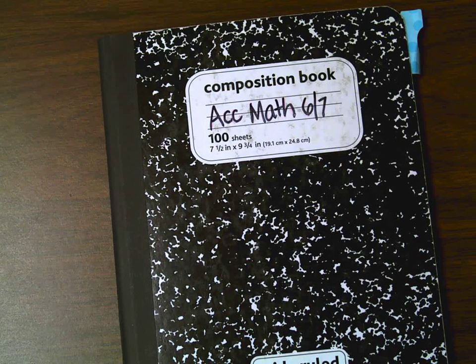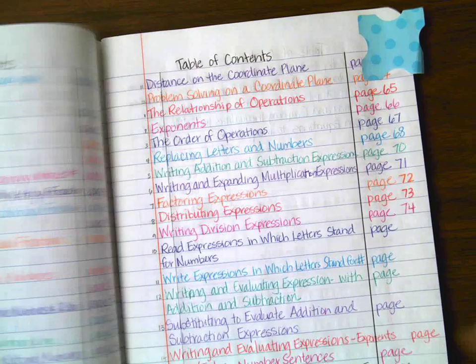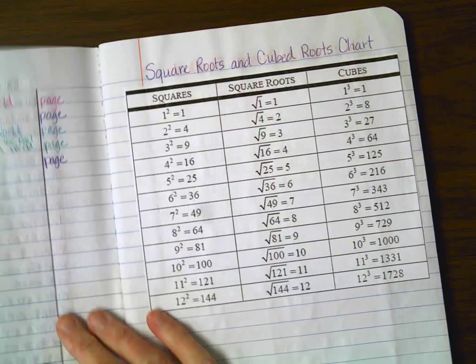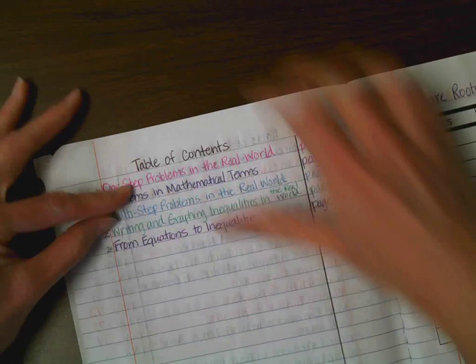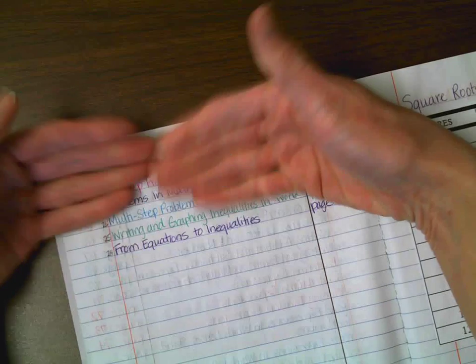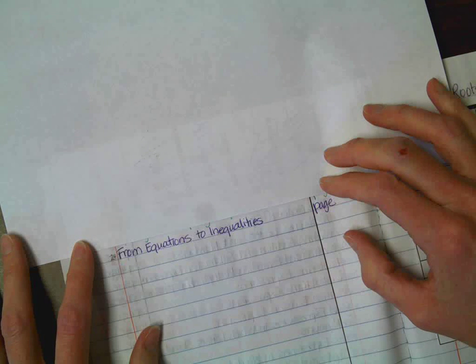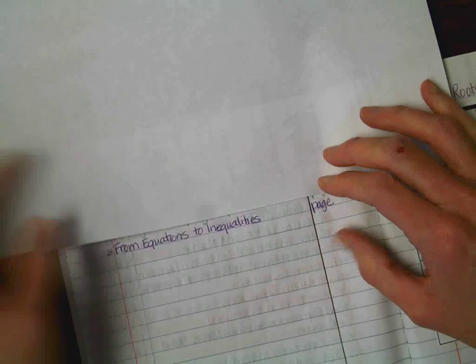Hello Accelerated Math 6-7 students. We are working in Module 4 and your video is on Lesson 24. The lesson we're working on is From Equations to Inequalities. Get that written down in your comp book and then turn to your next available page.